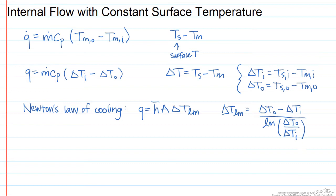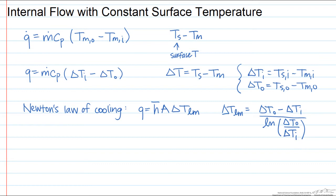So let's look at an example with a constant surface temperature. We have water. It flows through a pipe that has a length of 3 meters and a diameter of 5 centimeters.